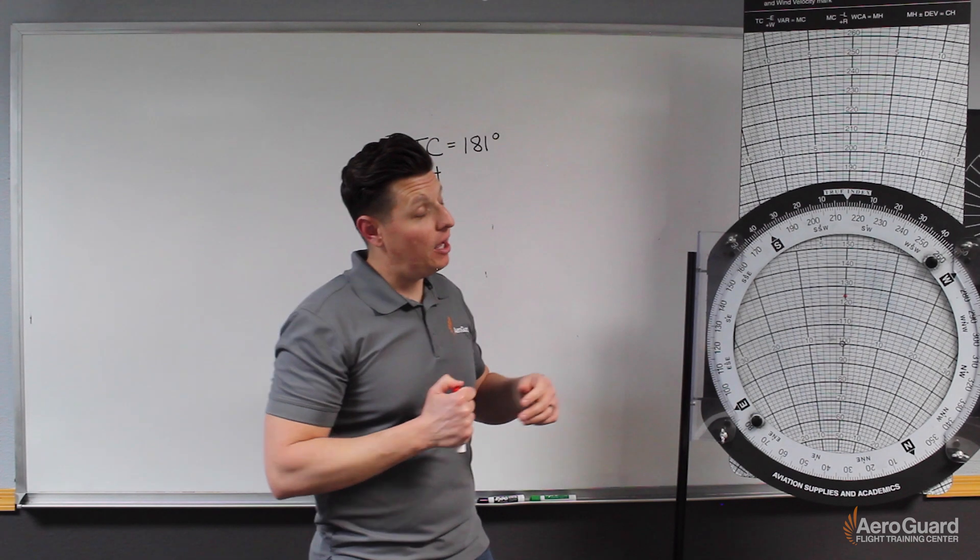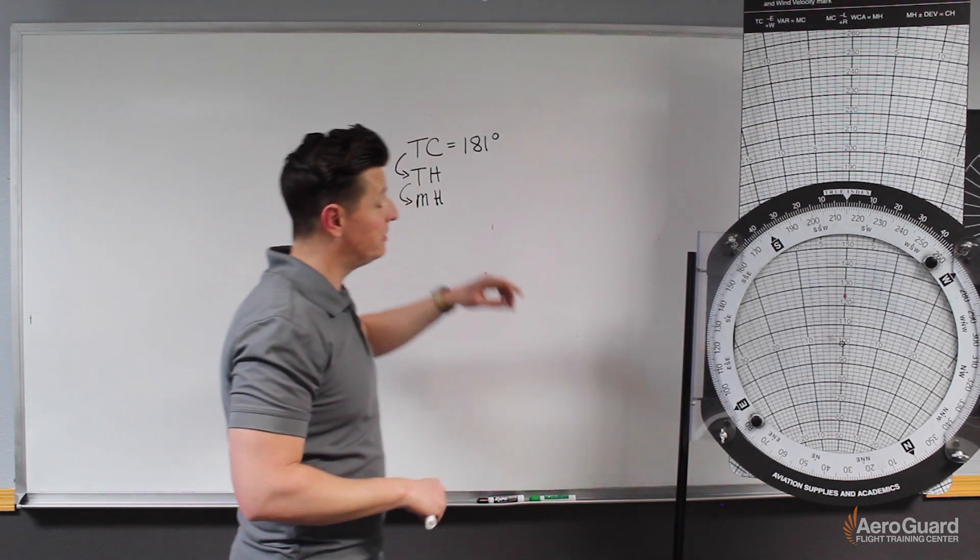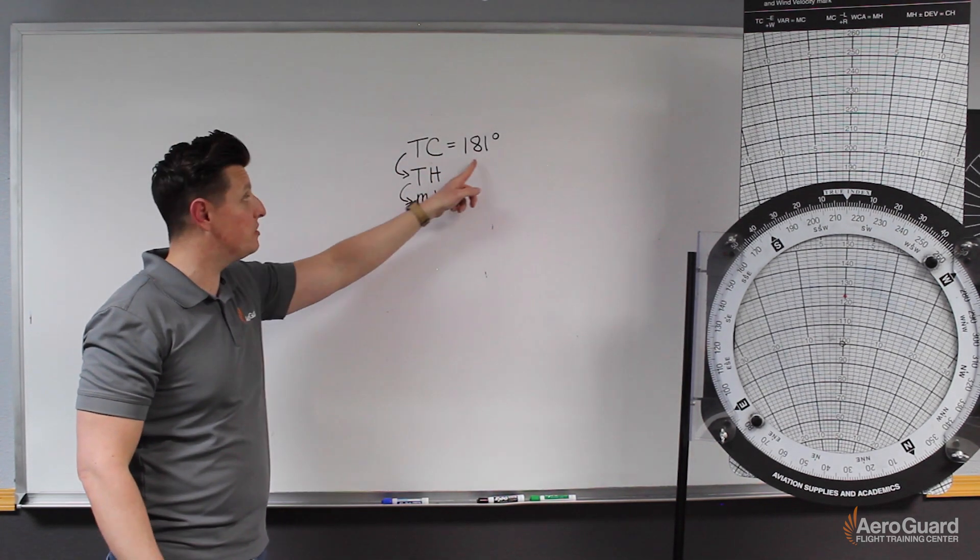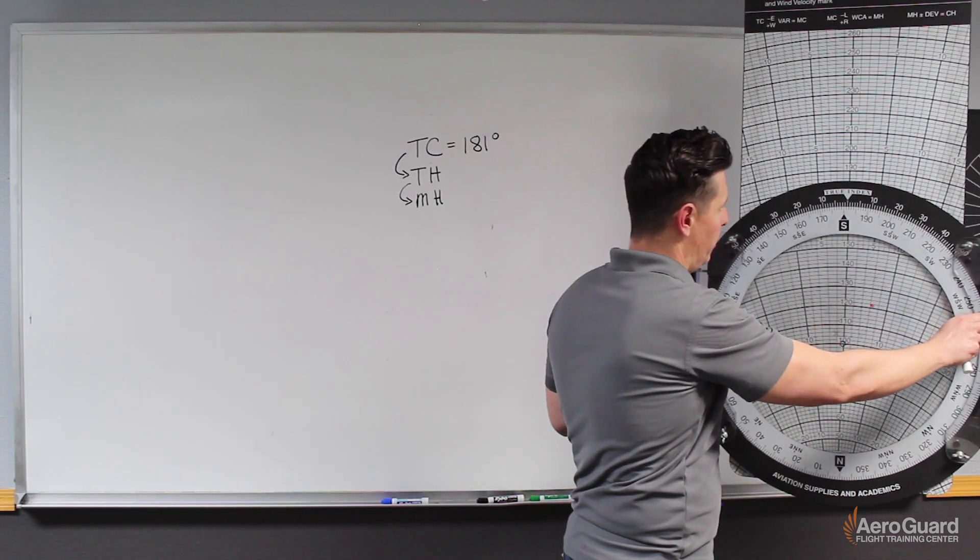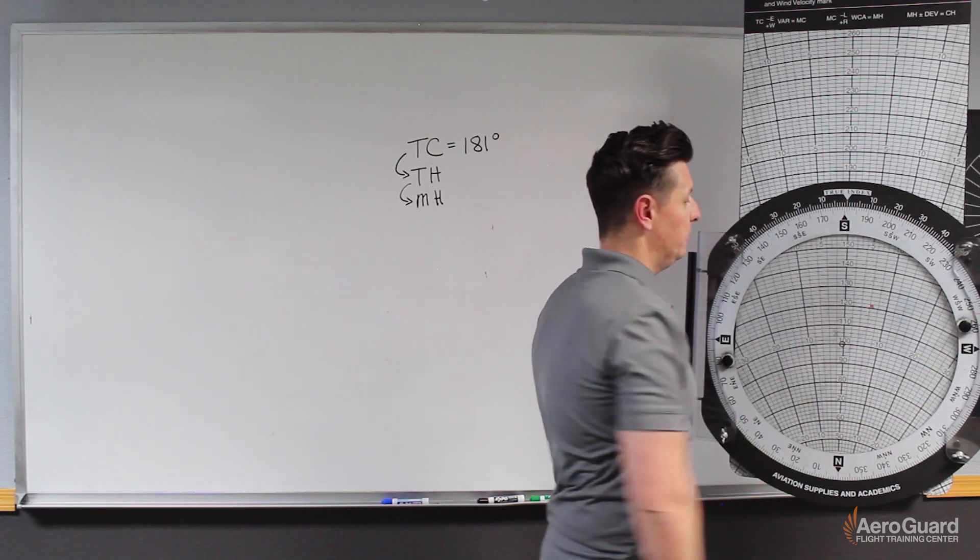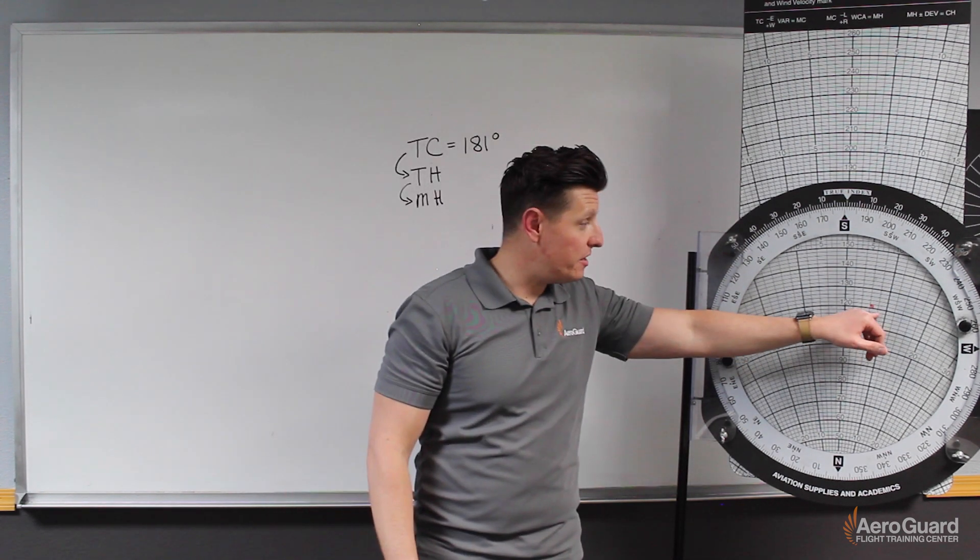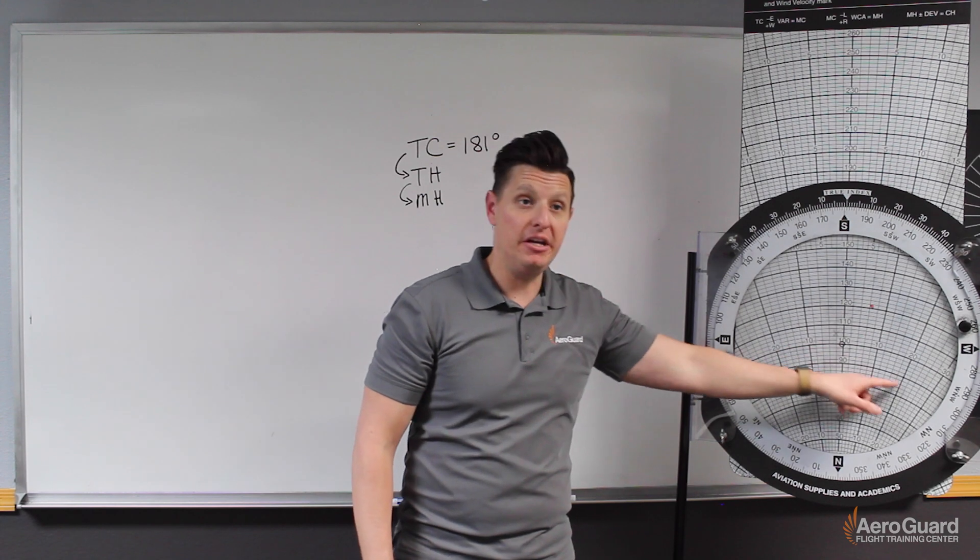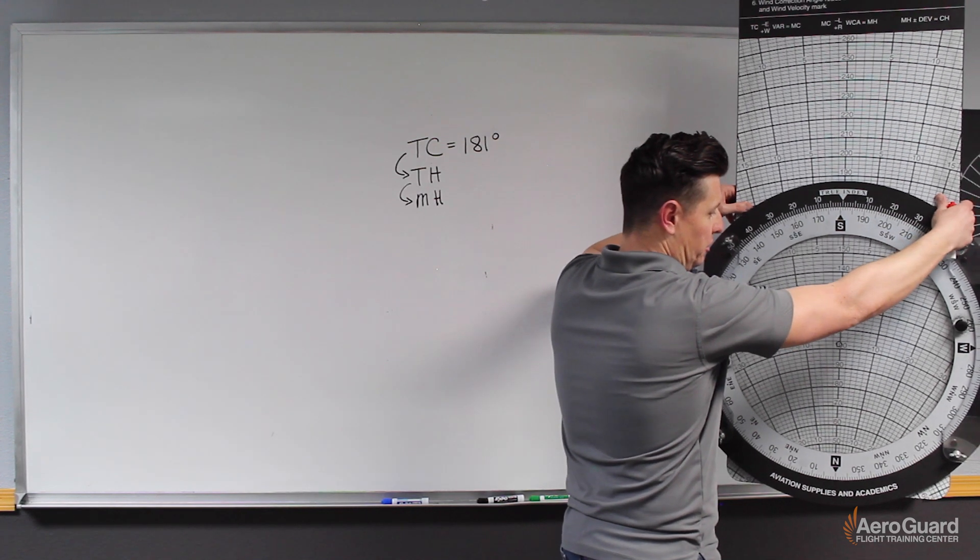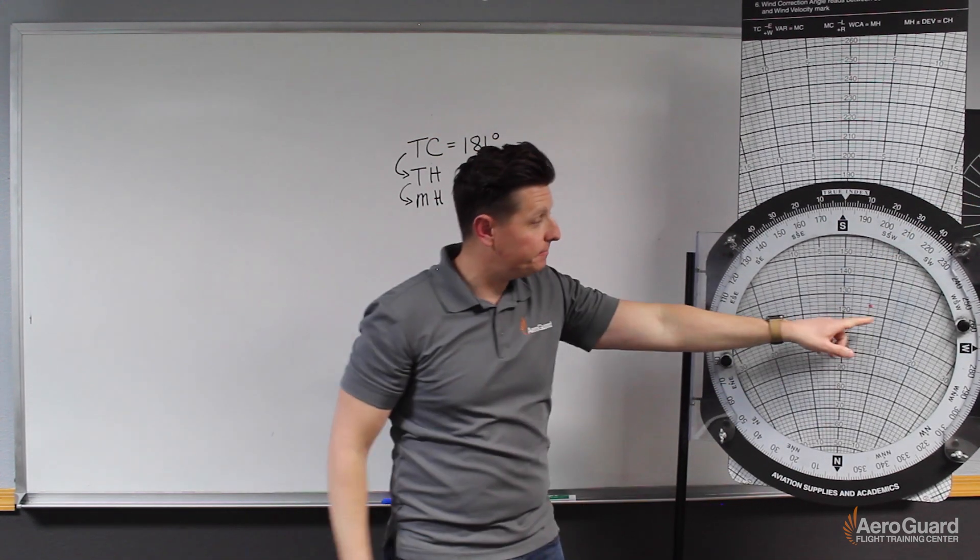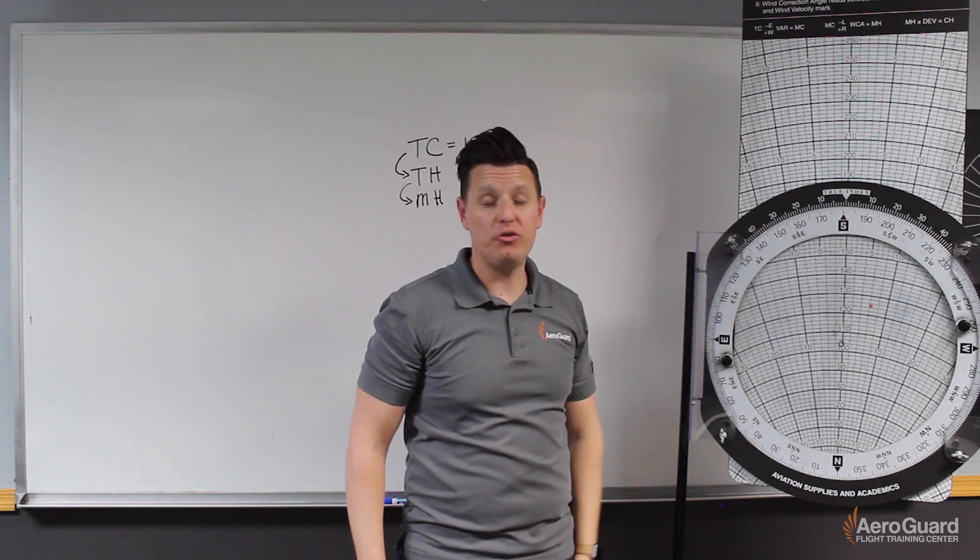Our next step with the E6B is to rotate our true course under this true index. As we recall from before, our true course is about 181 degrees. And our next step is going to slide this wind dot until it touches the true airspeed line. Our true airspeed was 125 knots, so I'm simply going to slide this down, and as you see, the wind dot now is touching this 125 line.